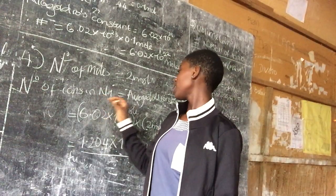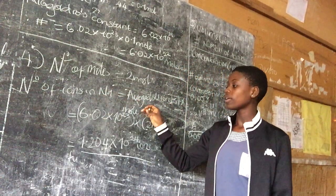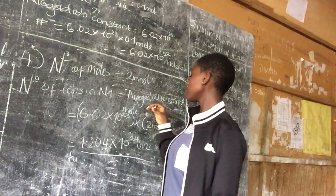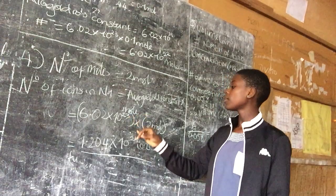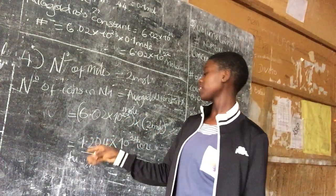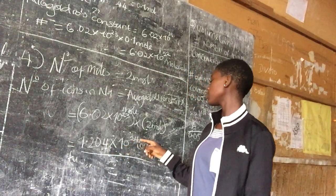So, number of ions in sodium, the formula given is Avogadro's constant times moles, which is equal to, the Avogadro's constant stands for 6.02 times 10^23, times 2 moles, which the answer gives us 1.204 times 10^24 ions.